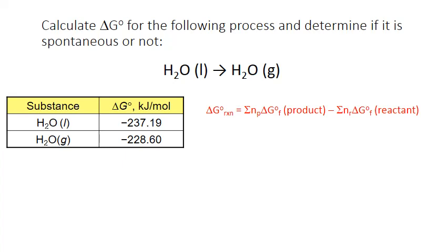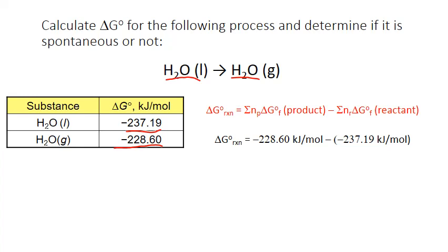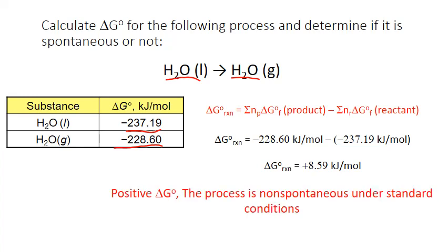We can look up these reference values for Gibbs free energy of formation in the appendix of your textbook. With coefficients of one on both reactants and products, the formula is simply the value for the product — gaseous water — minus the reactant — liquid water — giving us positive 8.59 kilojoules per mole. A positive Gibbs free energy change indicates a non-spontaneous process, and the degree subscript further qualifies this as being at standard conditions.